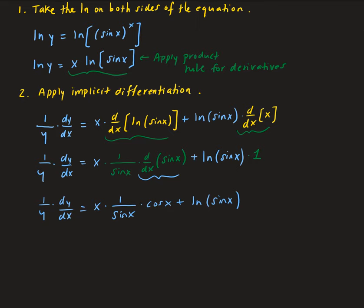We can solve for dy/dx by multiplying both sides by y. So dy/dx equals y times x times cosine x over sin x, plus natural log of sin x.